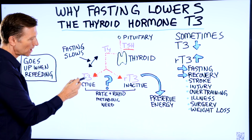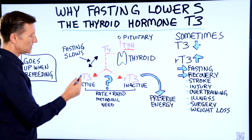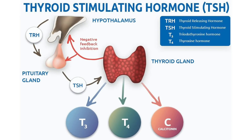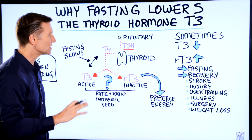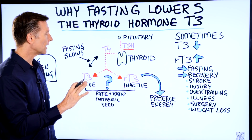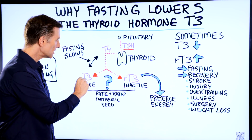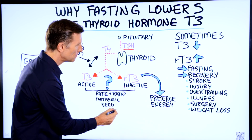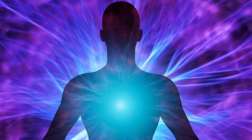But there's something else called reverse T3. The difference between T3 and reverse T3 is that T3 is active and reverse T3 is an inactive version. What determines the rate and ratio of this conversion to T3 or reverse T3 is the metabolic need, because this has to do with preserving energy.